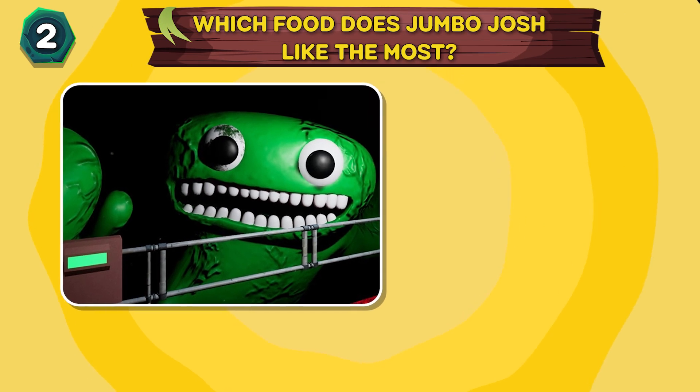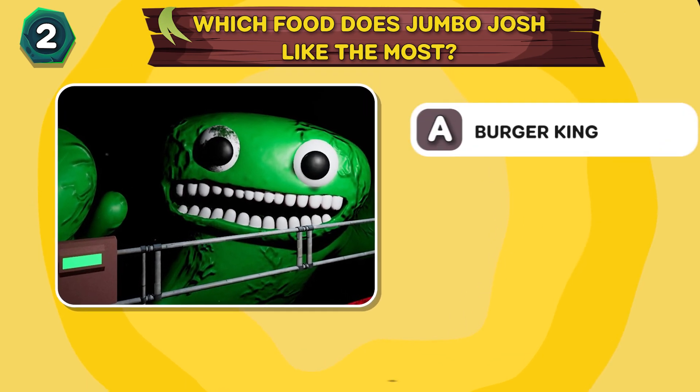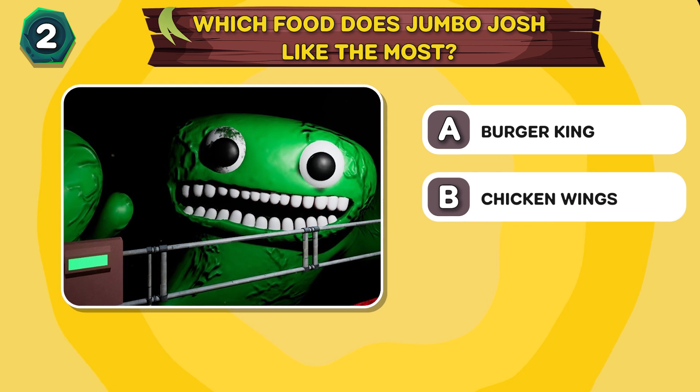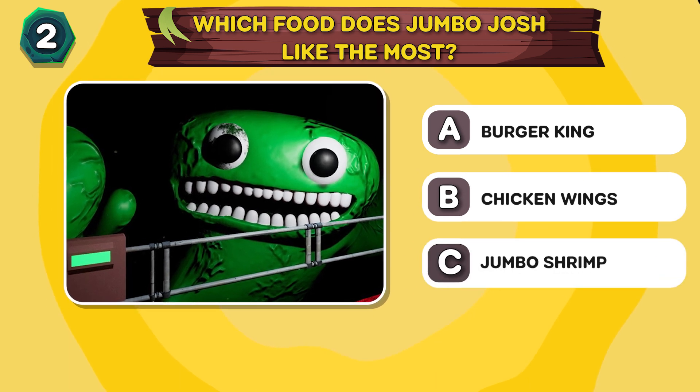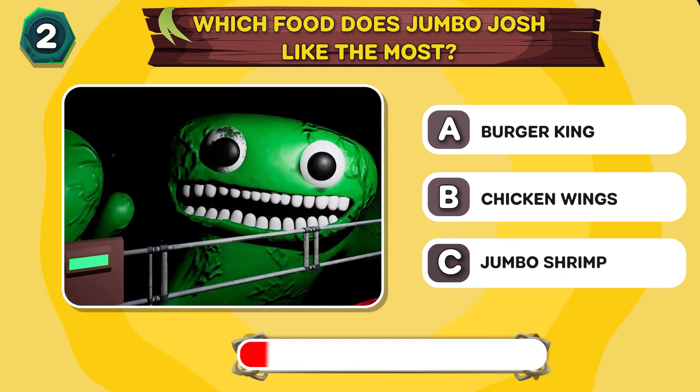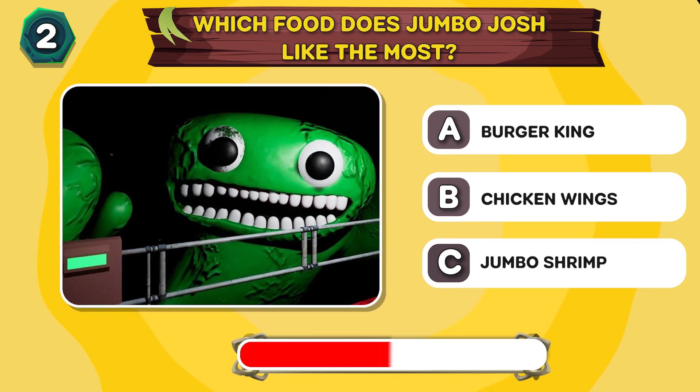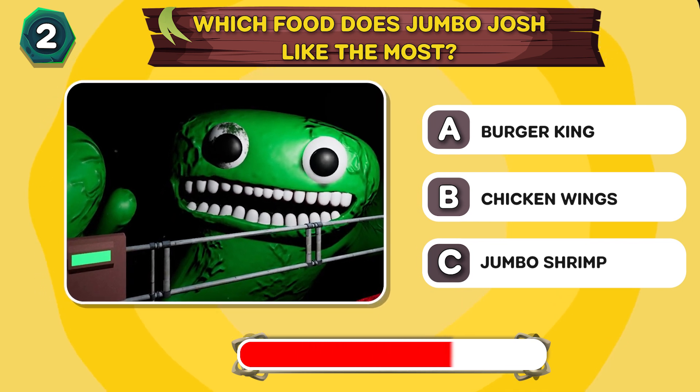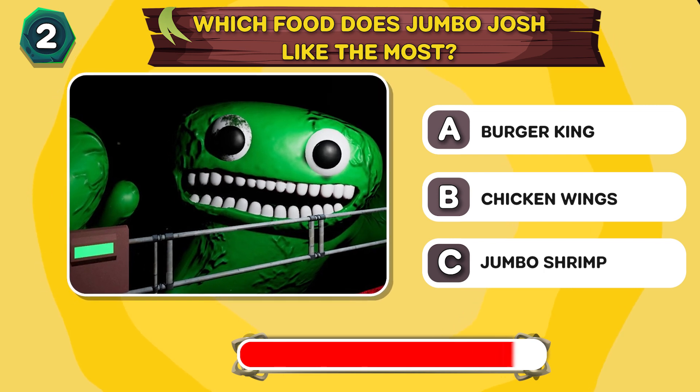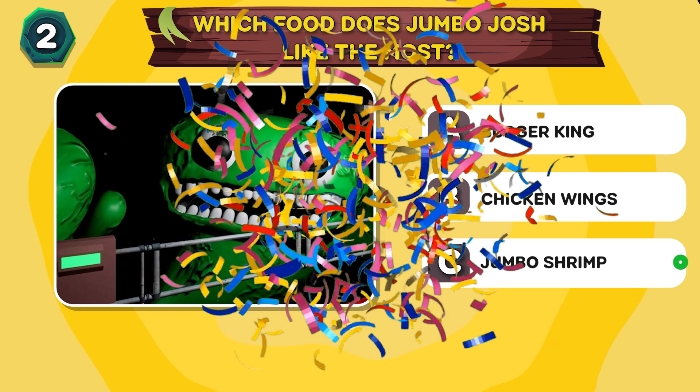Round 2. Which food does Jumbo Josh like the most? A. Burger King B. Chicken wings C. Jumbo shrimp. Of course it's C.